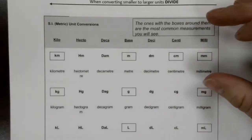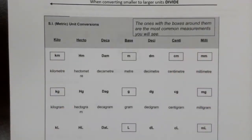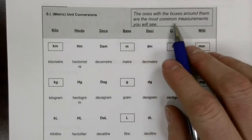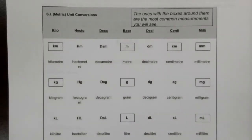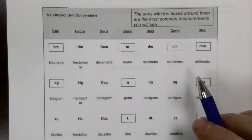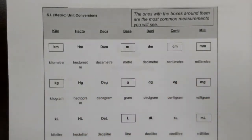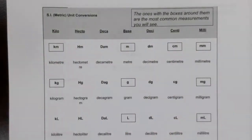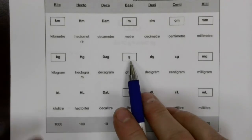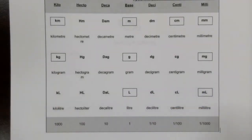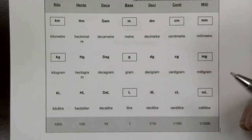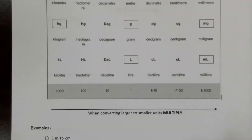With the metric unit conversions, the units in boxes on the chart are the most common measurements you'll see. The most commonly used length units are kilometer, meter, centimeter, and millimeter. For mass, it's kilogram, gram, and milligram — kilograms when weighing people, grams for buying things in bulk, and milligrams for medicine dosages. For volume, the most commonly used units are the liter and the milliliter.